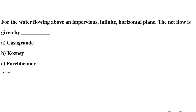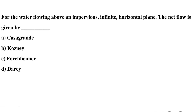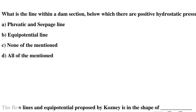Question 14: For water flowing above an impervious infinite horizontal plane, the net flow is given by — Option A: Casagrande, Option B: Cozeny, Option C: Forchheimer, Option D: Darcy. The correct answer is Option A: Casagrande.